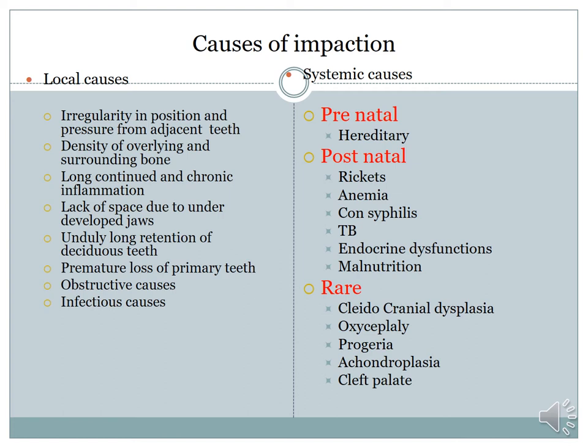What are the different causes for impaction? There are two: local causes and systemic causes. Local causes include irregularity in position and pressure from adjacent teeth, density of overlying and surrounding bone, long-continued and chronic inflammation, lack of space due to underdeveloped jaws, undue long retention of deciduous teeth, premature loss of primary teeth, obstructive causes, and infectious causes.